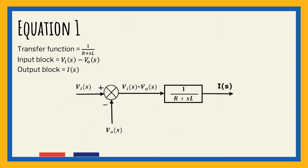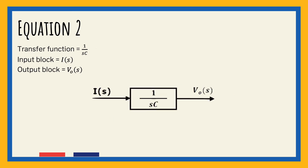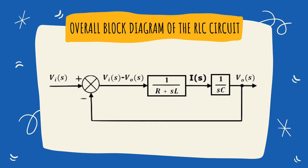Equation 1 can be implemented with a block having transfer function 1/(R + sL). The input is V_i(s) − V_o(s) and the output is I(s). We require a summing point to get V_i(s) − V_o(s). The block diagram of equation 1 is shown in the figure. Equation 2 can be implemented with a block having transfer function 1/(sC), with input I(s) and output V_o(s). Lastly, we combine the block diagrams of both equations to arrive at the overall block diagram of the series RLC circuit in the S domain.